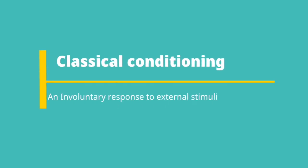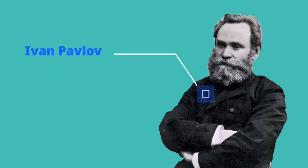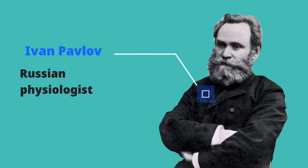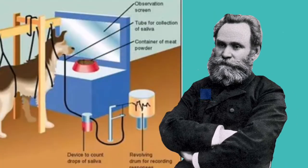Classical conditioning is defined as an involuntary response to external stimuli. Classical conditioning was discovered by a Russian psychologist called Ivan Pavlov. Pavlov was studying salivation, digestion, and involuntary responses in dogs before he proved the theory of classical conditioning.